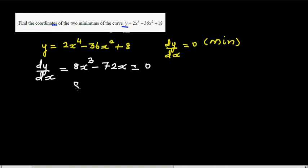And then you have got x squared minus 9. So we can say 8x is equal to zero or x squared minus 9 equal to zero.